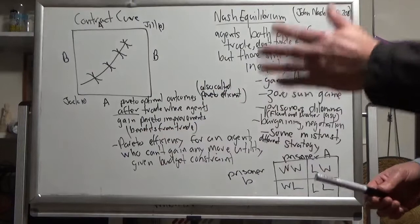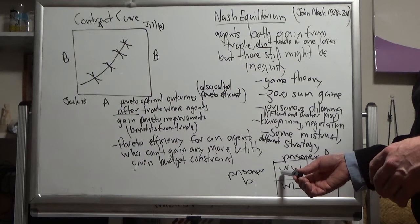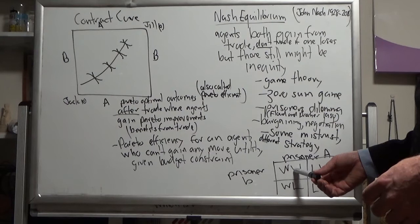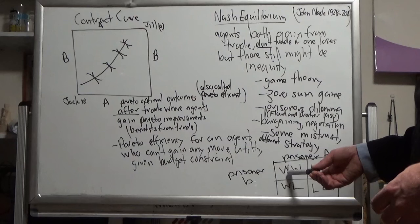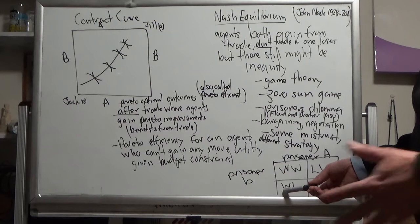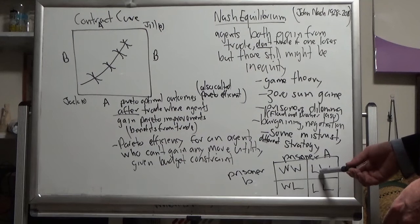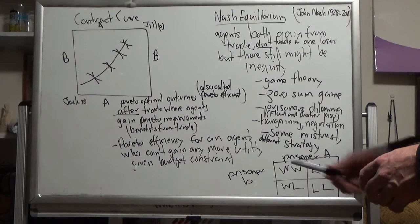If they both cheat and tell stories to the court and lie and make an agreement, both win, they both get lighter sentences. However, what happens is prisoner B wants to cheat on the agreement with prisoner A, and he will gain from cheating from the prisoner's agreement. Similarly, prisoner A will want to cheat on that original agreement too and win and cheat on the other guy.